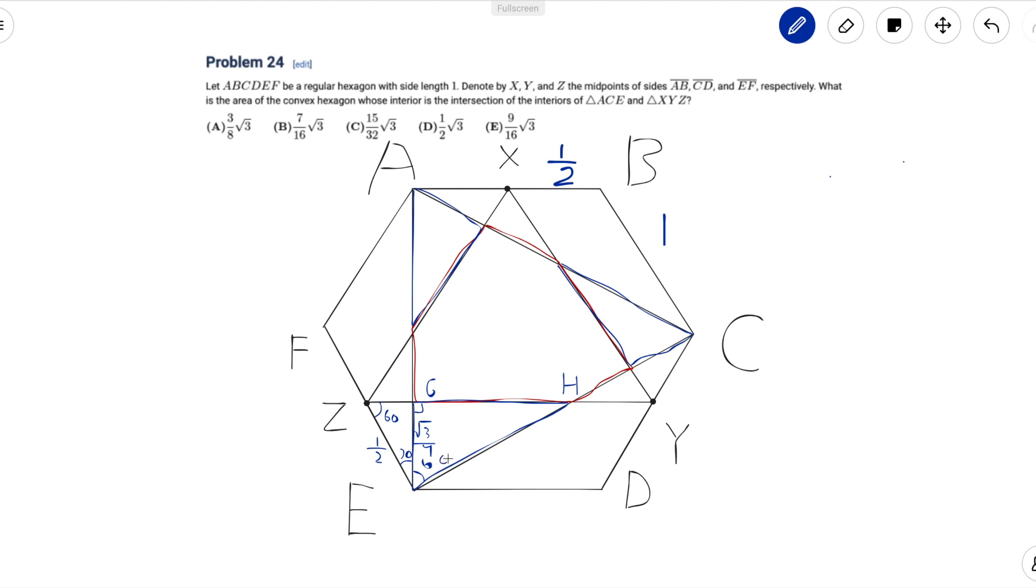Since angle EGH is 90 degrees, angle EHG must be 30 degrees which means that EHG is also a 30-60-90 triangle. So that means that GH is just 3 over 4.